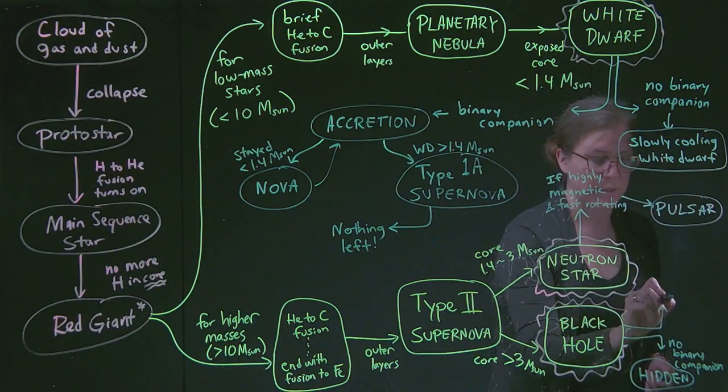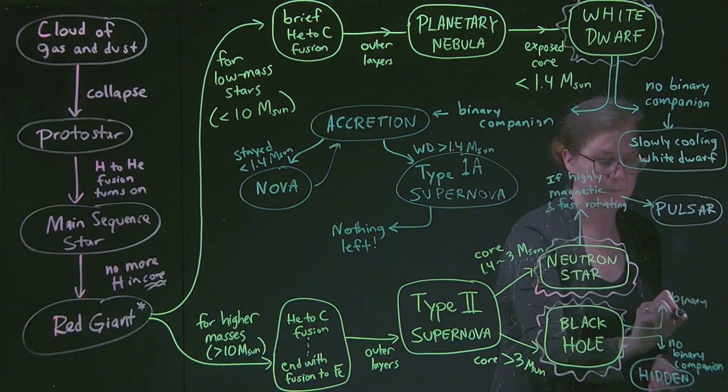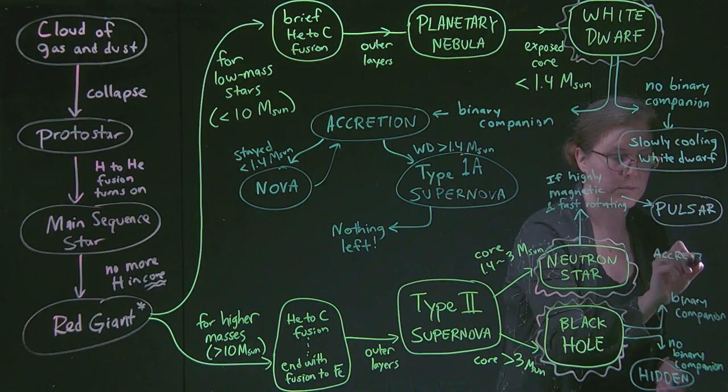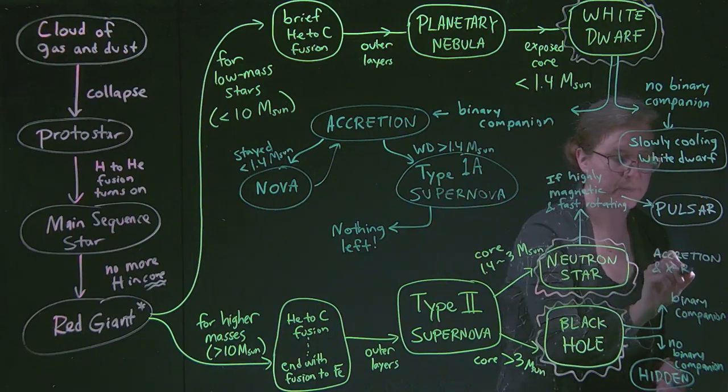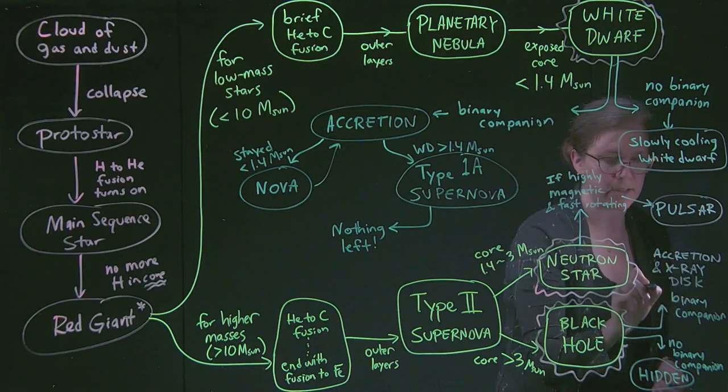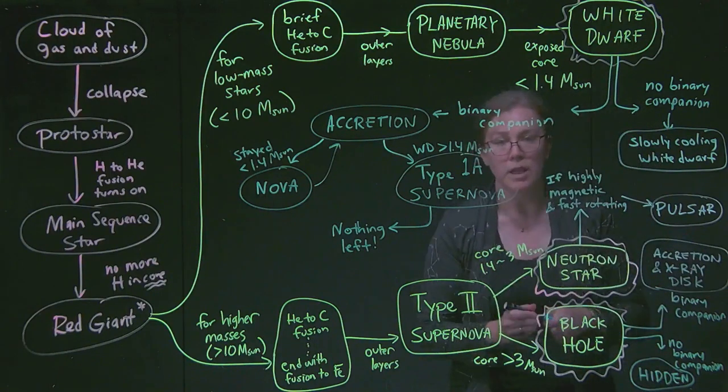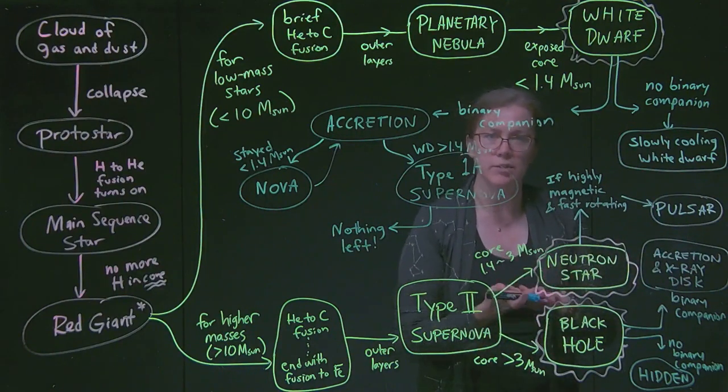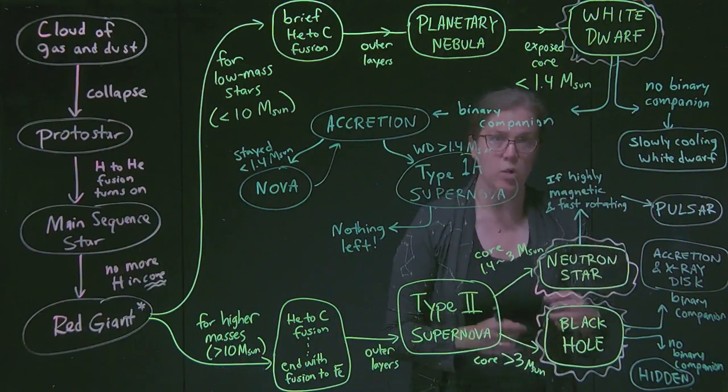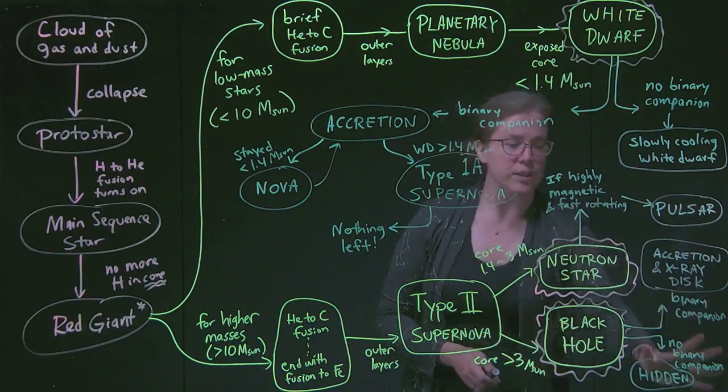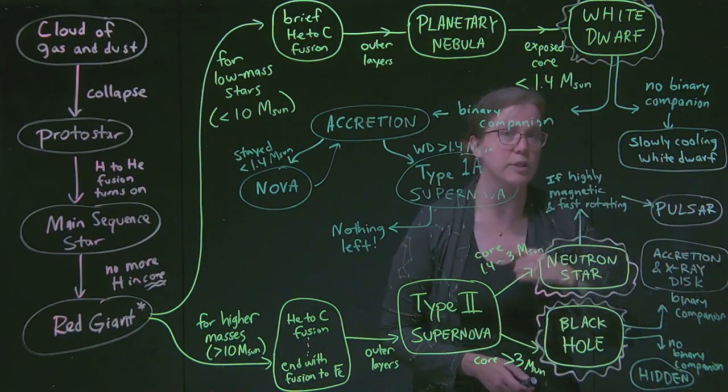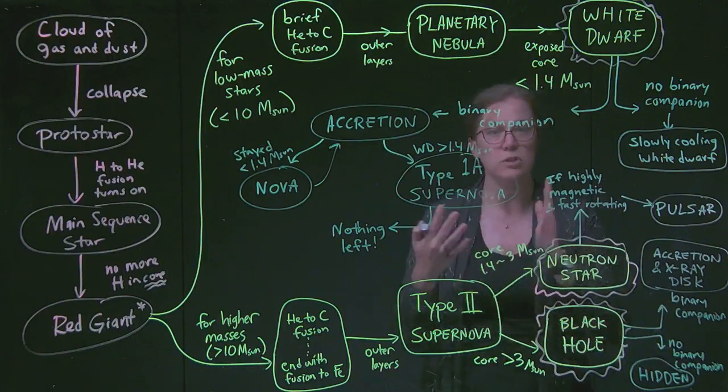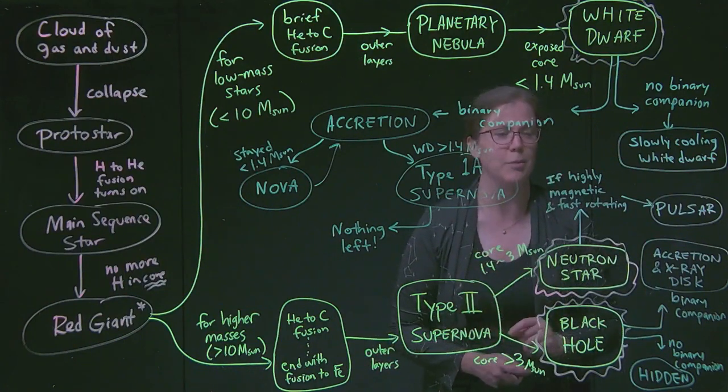But if they have a binary companion, and this is the last thing we're going to add here, so if there is a binary companion, then we can get accretion and an x-ray disk. And what we mean by that is for that x-ray binary system, accretion is creating this hot swirling material that is not yet inside the black hole. And all of that stuff can kind of shear and slowly fall towards the black hole and create these big jets of x-ray material. But again, this kind of stuff is less important to our curriculum, but is relevant to the way that astronomers can actually observe these things.